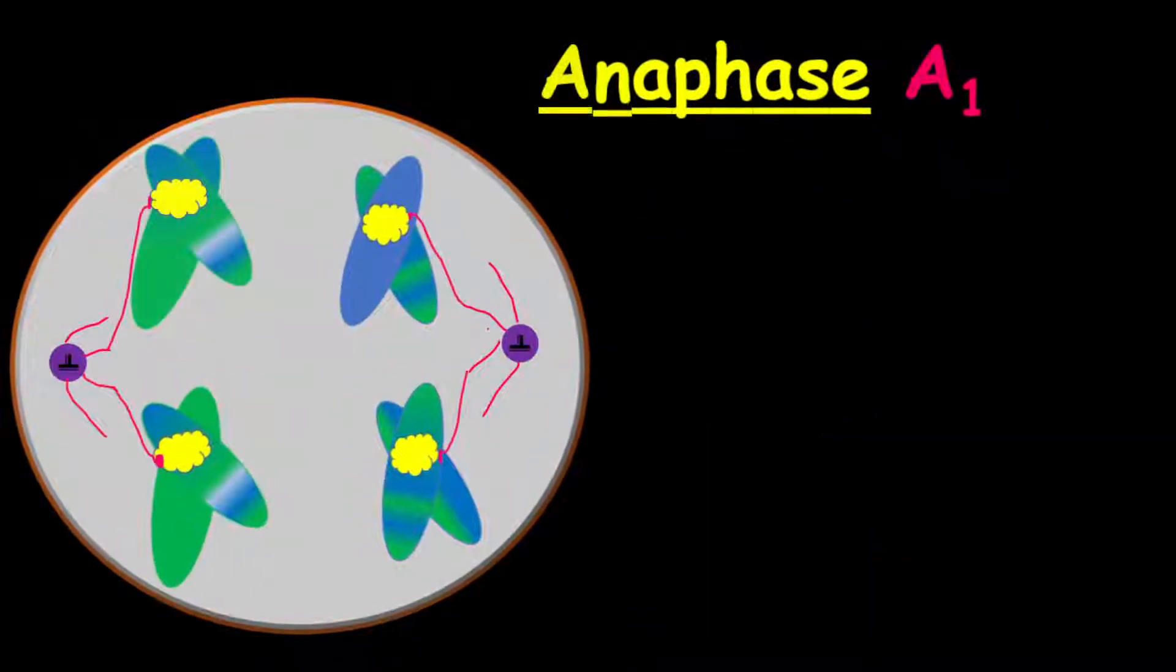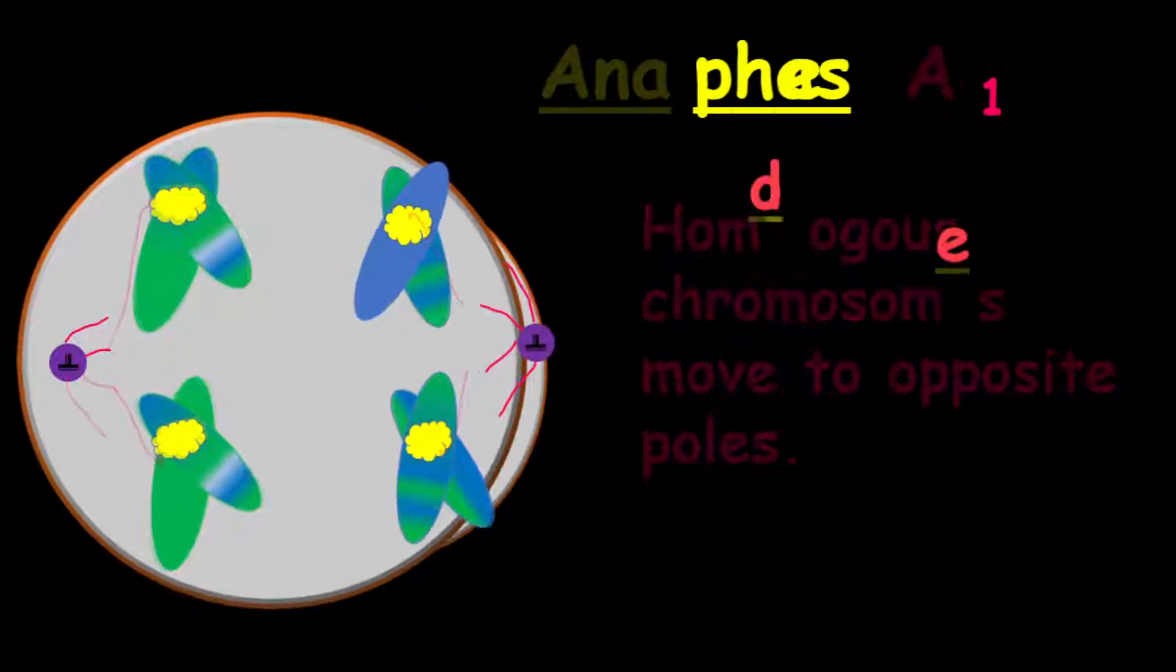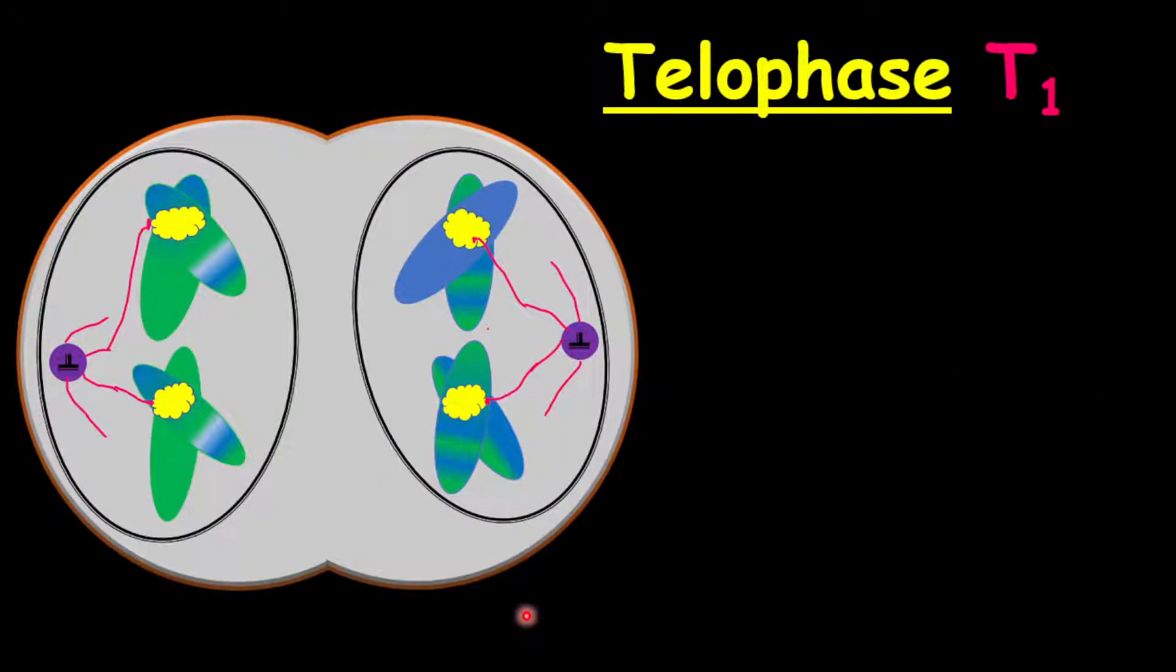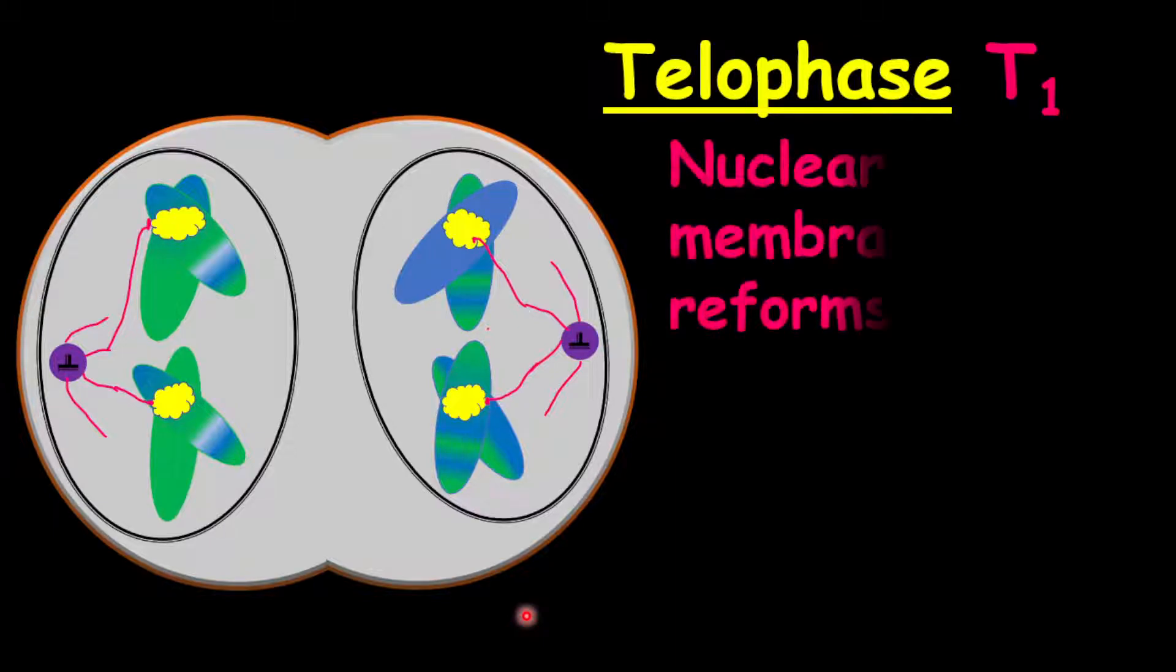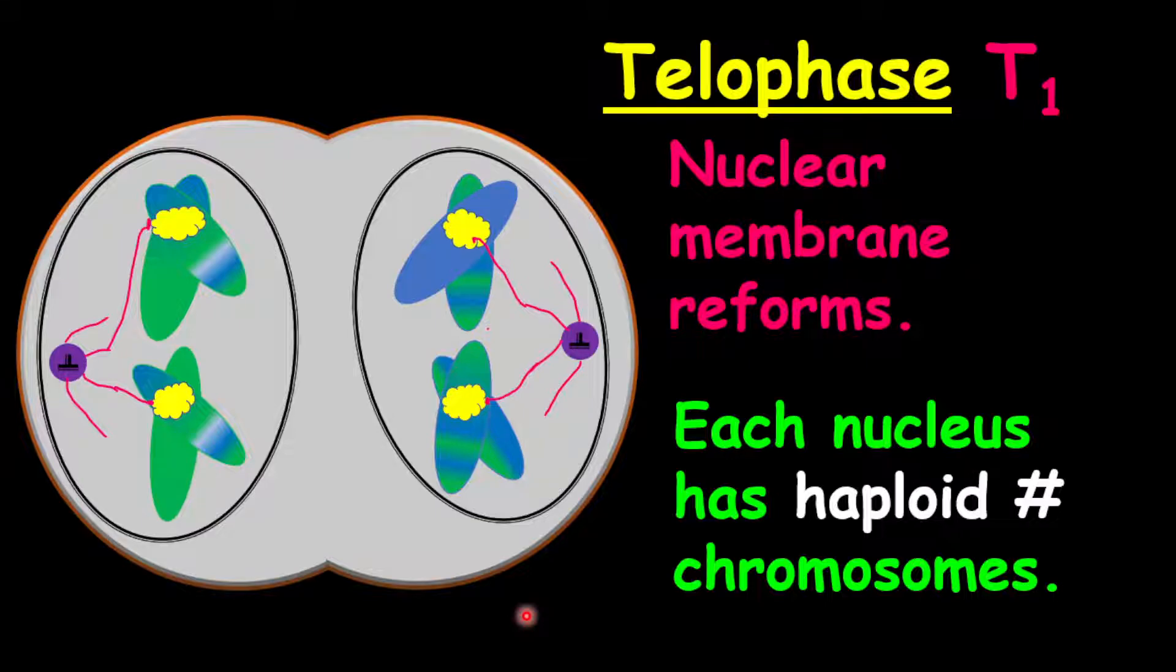After metaphase one, then we go on to anaphase one, and this is where the chromosomes will move to opposite poles of the cell. Once that is completed, we undergo telophase one, and this is where a nuclear membrane will form. The chromosomes will also cluster to the ends of the cell. Also, our cleavage furrow will also form. And a point to note here is that each new nucleus has half the number of chromosomes than what we started out with. That is why meiosis one, or division one, is classified as a division by reduction, because the number of chromosomes decreased by half.